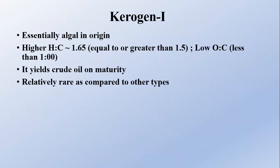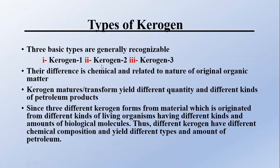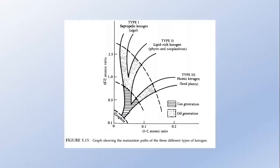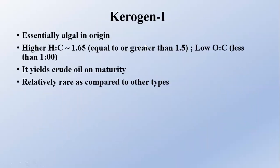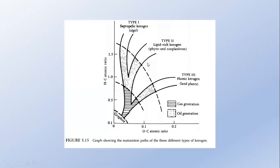This is essentially algal energy — it is formed from algae. The basis of hydrogen to carbon as well as oxygen to carbon ratio: it contains a higher hydrogen to carbon ratio of 1 to 6.5, and a low oxygen to carbon ratio of less than 1. This is Type 1 kerogen. It contains more than 1.5 and less than 0.1.